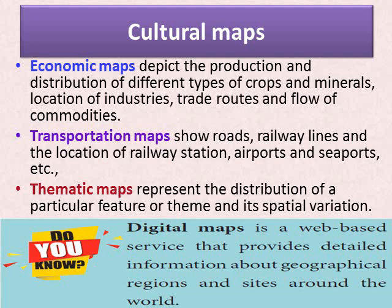A transportation map shows roads, railway lines, and location of railway stations, airports, seaports, etc. A thematic map represents the distribution of a particular feature or theme and its spatial variation. So under cultural maps you have: political map showing administrative divisions, population map showing distribution and density of population, economic map showing production and distribution of crops and minerals, transportation map showing roads and railways, and thematic map showing distribution of a particular theme.